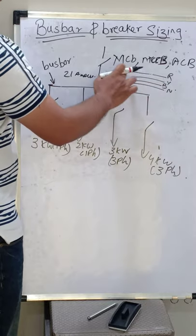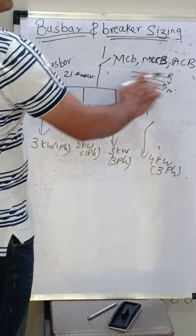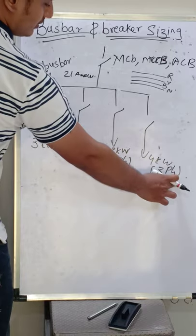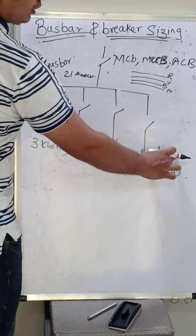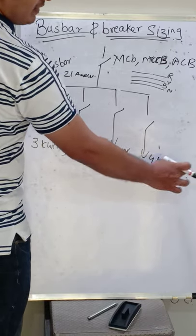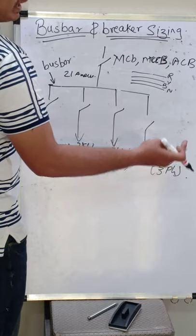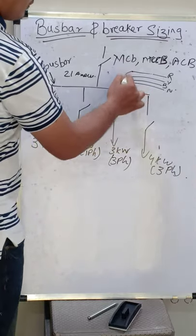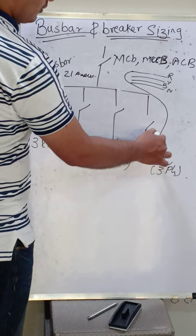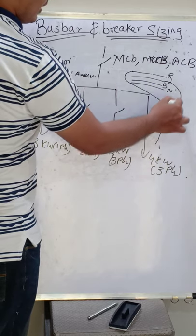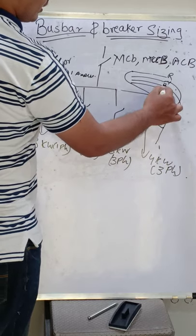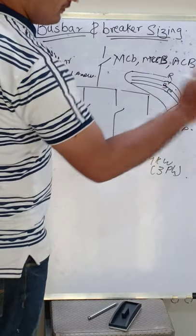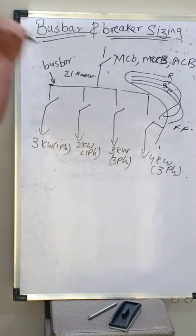In a panel, the bus bar for R phase, Y phase, B phase, and neutral will each be separate. For the 4 kilowatt three-phase load, it will require R, Y, B, and neutral. From the R phase it goes to this breaker, Y phase to this breaker, B phase to this breaker, and neutral to this breaker — if this breaker is of four pole. This is how we use a bus bar for load distribution.